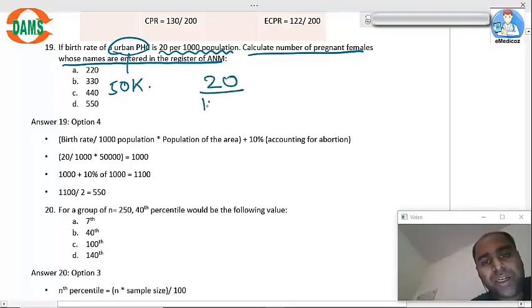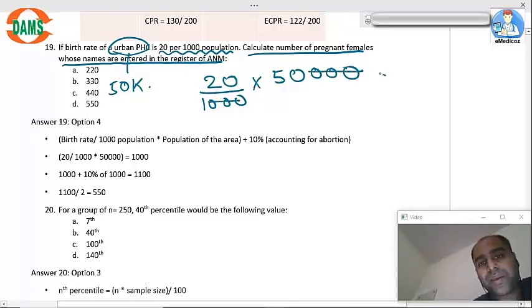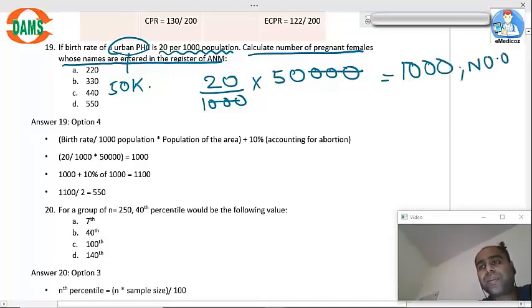20 per thousand into 50,000, so 1000 is the number of pregnancies. Sorry, is the number of live births. Now to calculate the number of pregnancies for a year, we have to add 10 percent to it. So thousand plus 10 percent of 1000, so it is 1100.